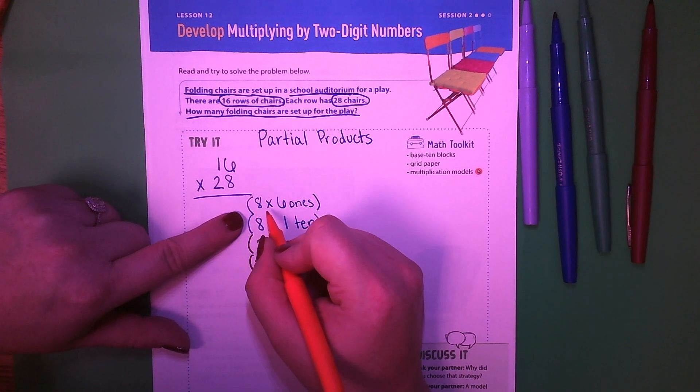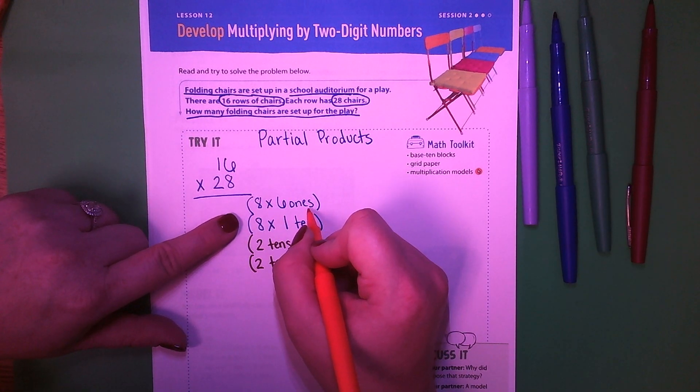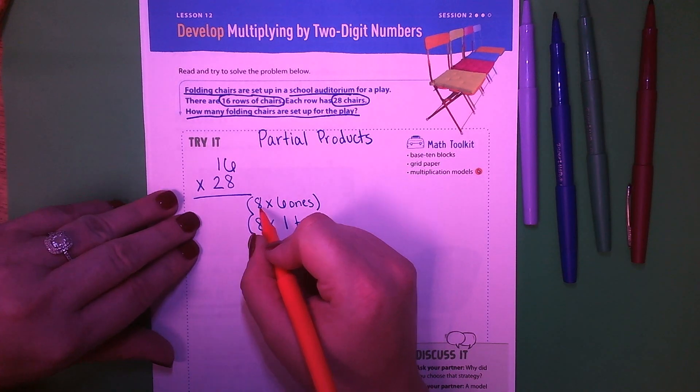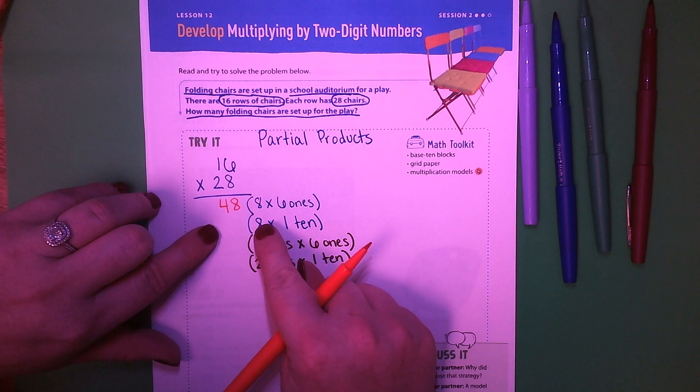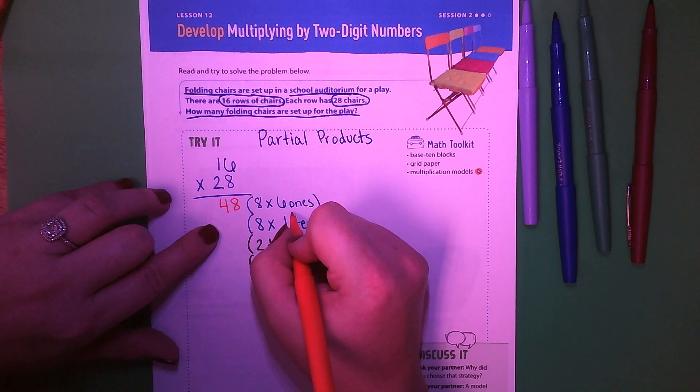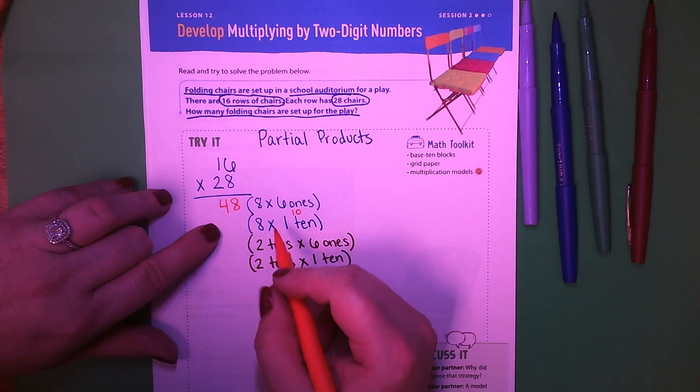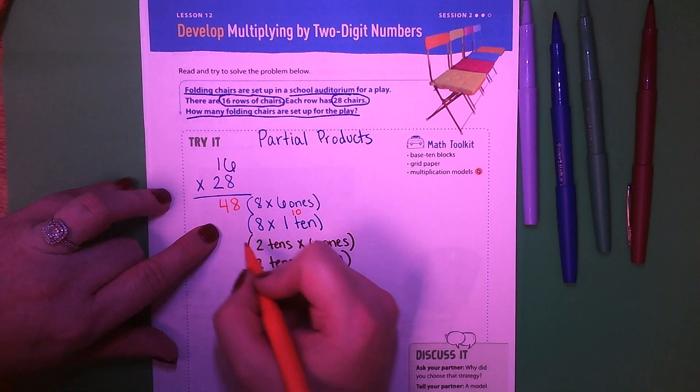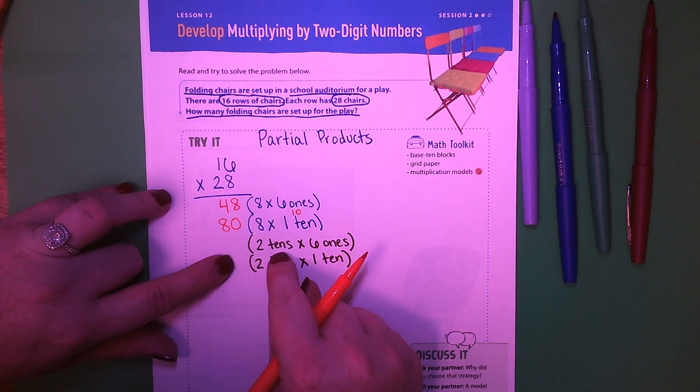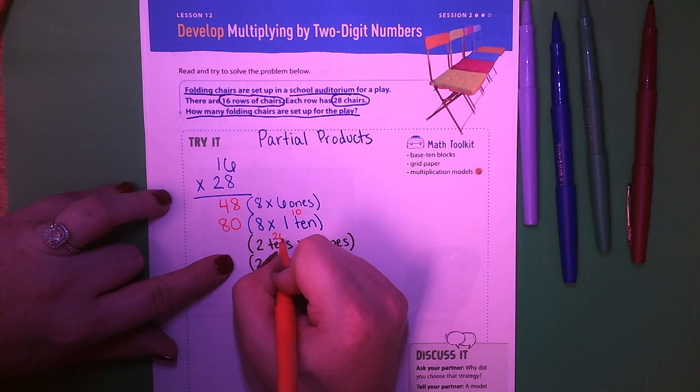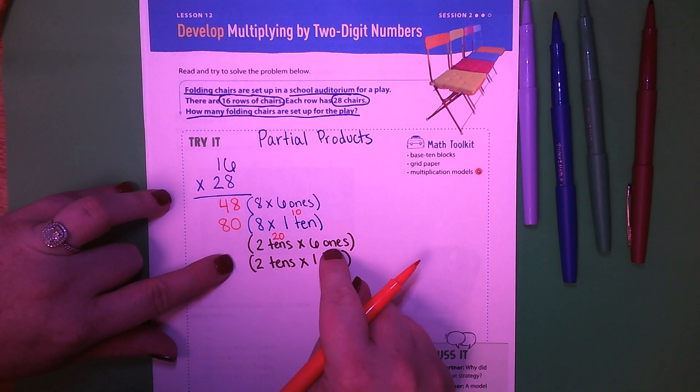Then I'm going to go over here to this 2. This 2 is in the tens place, so it would be 2 tens times, and we're going to start up here at the corner first, 6 ones. Then I'm going to do 2 tens times 1 ten. Now I'm going to figure out how much each of these is worth. Well, 8 times 6 ones means that's just worth 6. So 8 times 6 is 48.